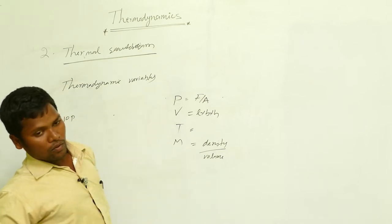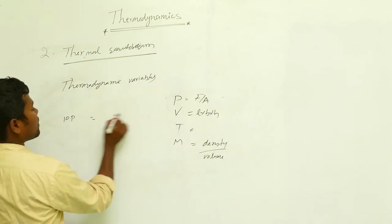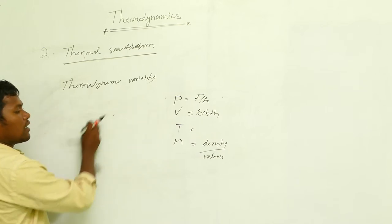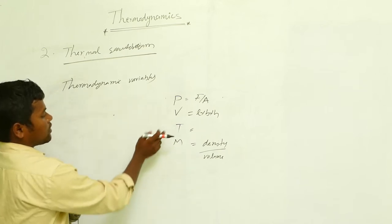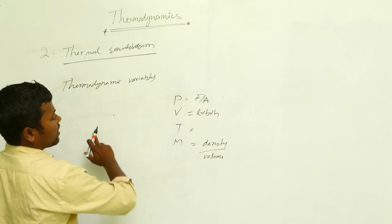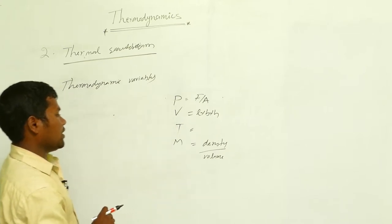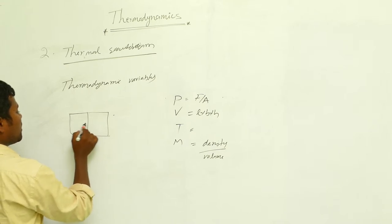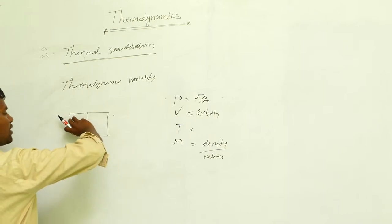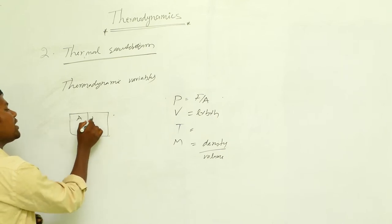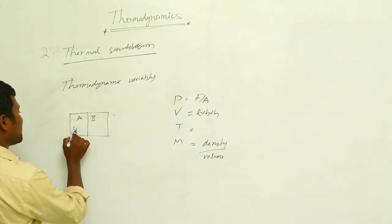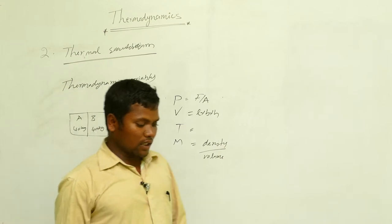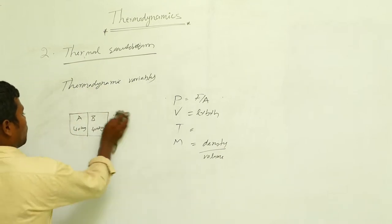If I apply 10 meter cube volume here as well, then the whole system will be at equilibrium. When pressure, volume, temperature, and mass on both sides are the same — suppose here 40 kg and here also 40 kg — we say that is the thermal equilibrium position.